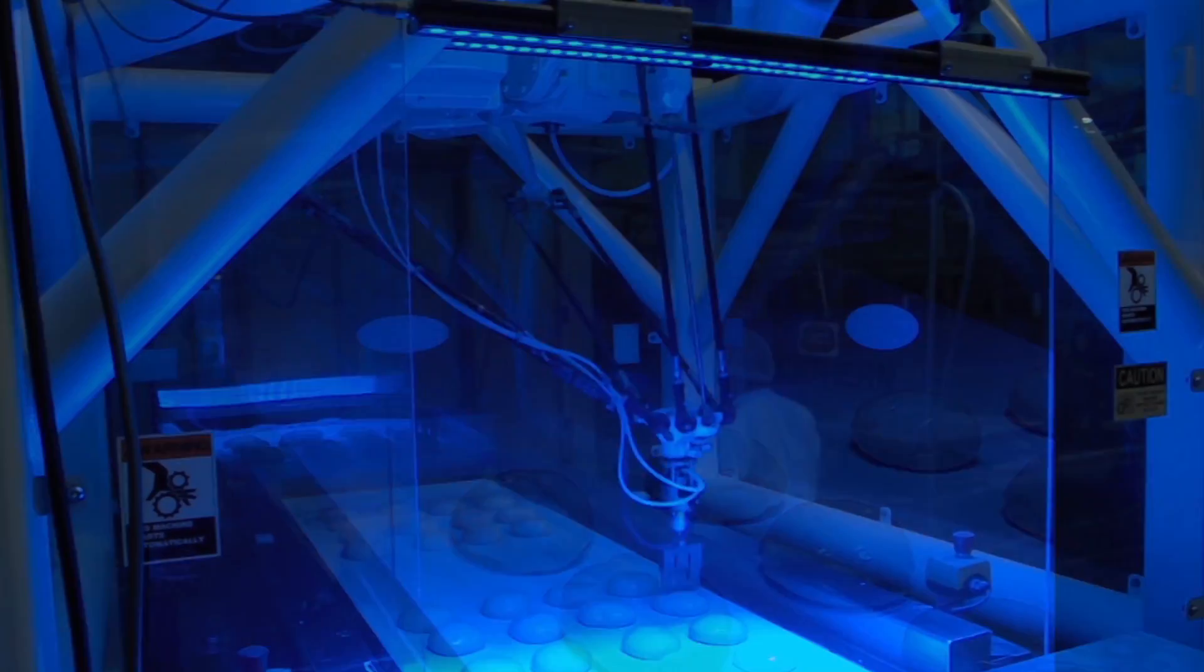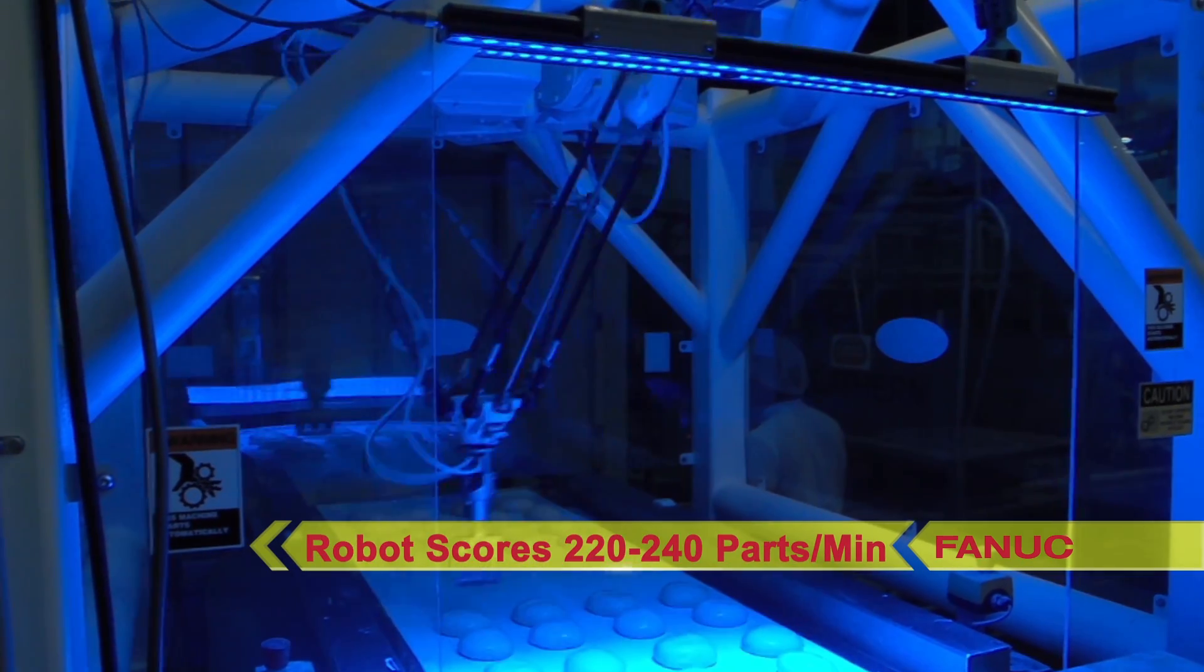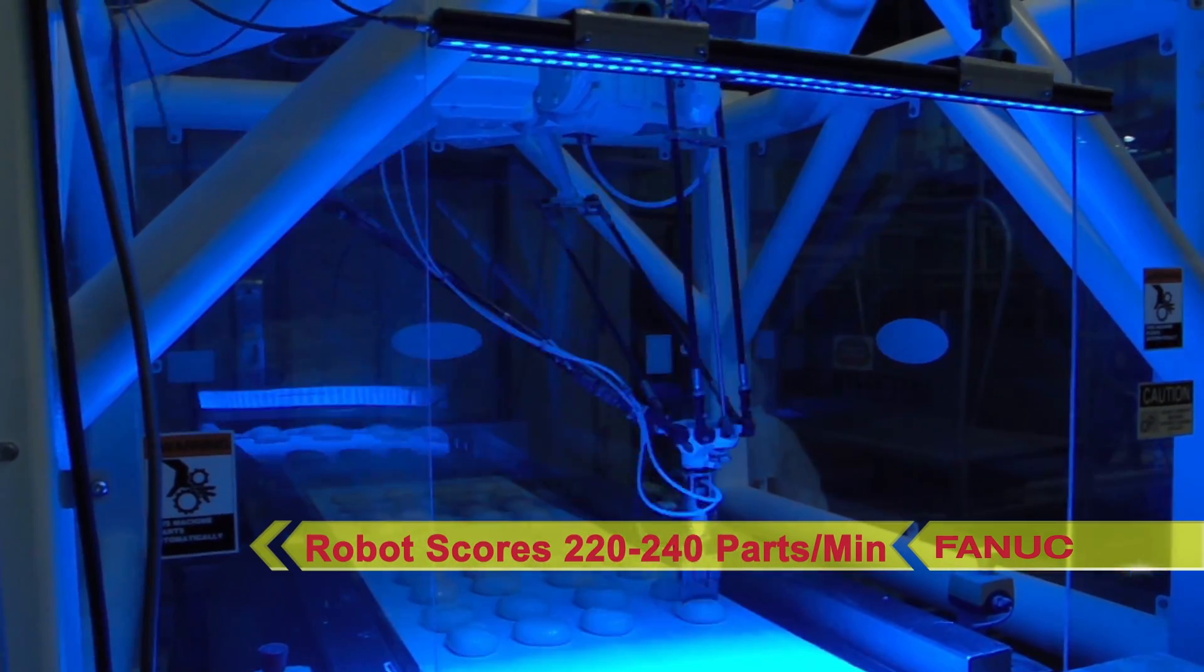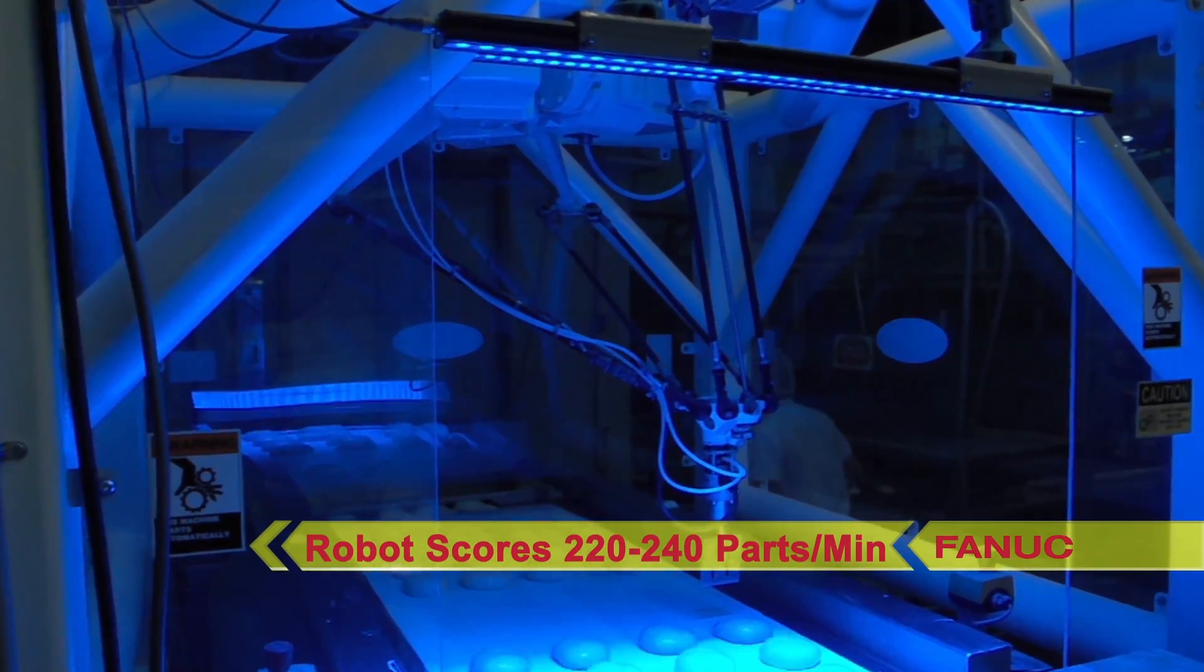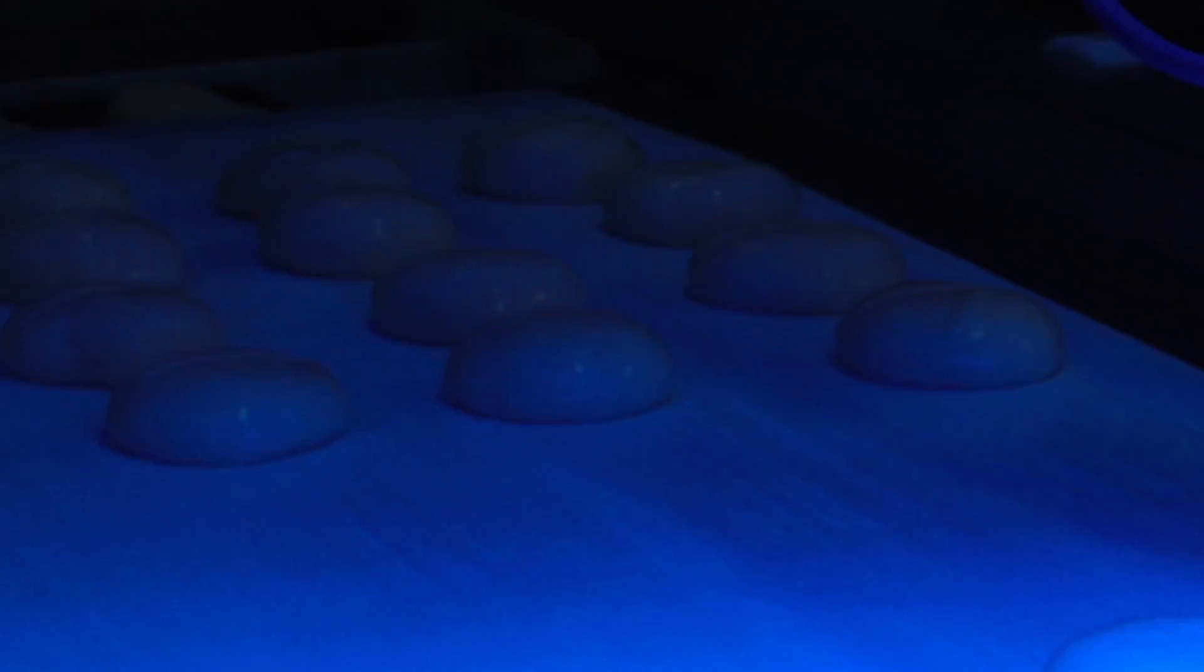This single system with the ultra-fast FANUC M2IA robot is capable of scoring approximately 220 to 240 pieces of product per minute. Multi-robot systems are also available to accommodate bakeries with different or faster production needs.